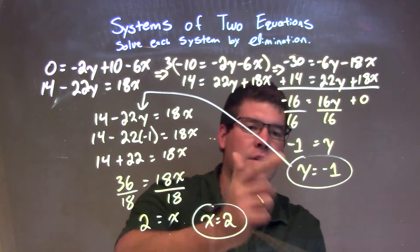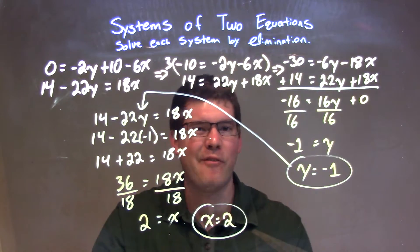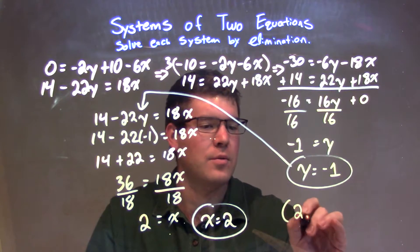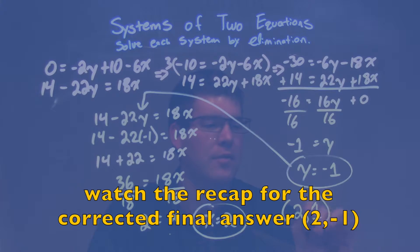Now we have our x and our y value. We can write this as a final answer in coordinate point form of 2 comma negative 1, our x value first, then our y. And there we have it. Our final answer is 2 comma negative 1.